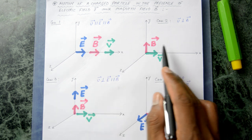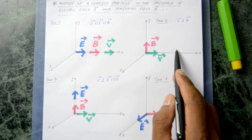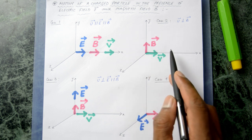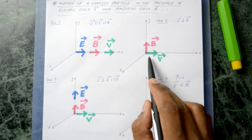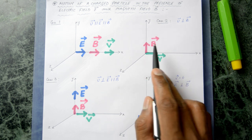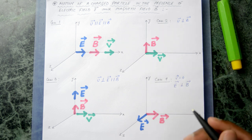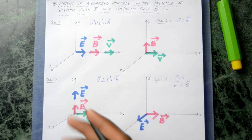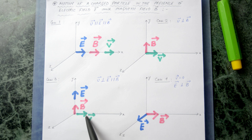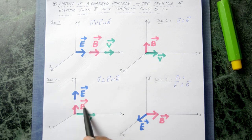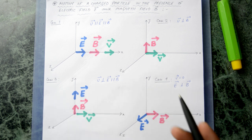In case number two we have a situation where there is no electric field but only a magnetic field is present, and the particle is moving in a direction perpendicular to the magnetic field. In case number three the particle is moving perpendicular to both the electric field and the magnetic field, while the electric field and magnetic field are parallel to each other.